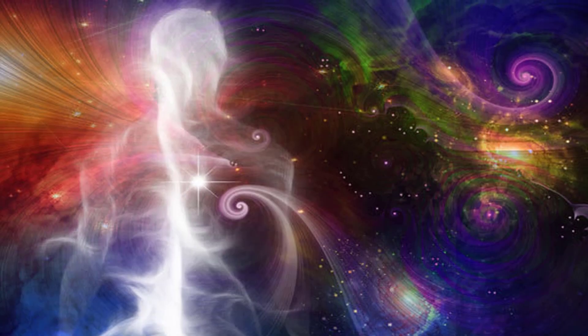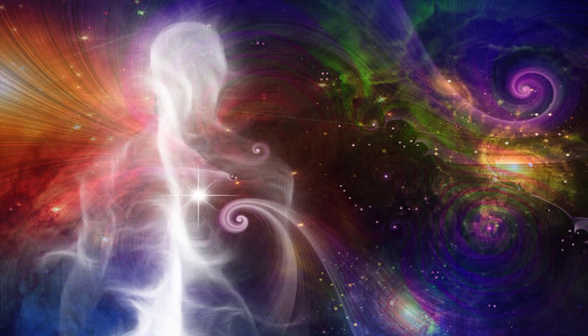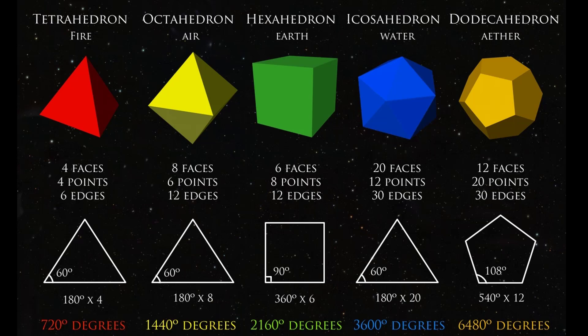The ether energy can arrange itself into basic geometrical wave patterns that were named after Plato, the platonic solids, to form matter. Almost 2,500 years ago, Plato wrote that the physical world was constructed from the platonic solids.